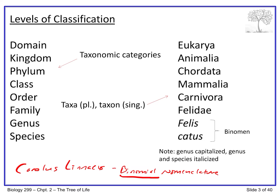Here is the classification system for house cats. Domain: Eukarya. Kingdom: Animalia — animals are a group within the eukaryotes, along with plants, fungi, and everything else. Phylum: Chordata — a type of animal. Class: Mammalia. Order: Carnivora. Family: Felidae. Genus: Felis. Species: catus. So Felis catus is the unique two-part scientific name — the binomen — for the house cat.